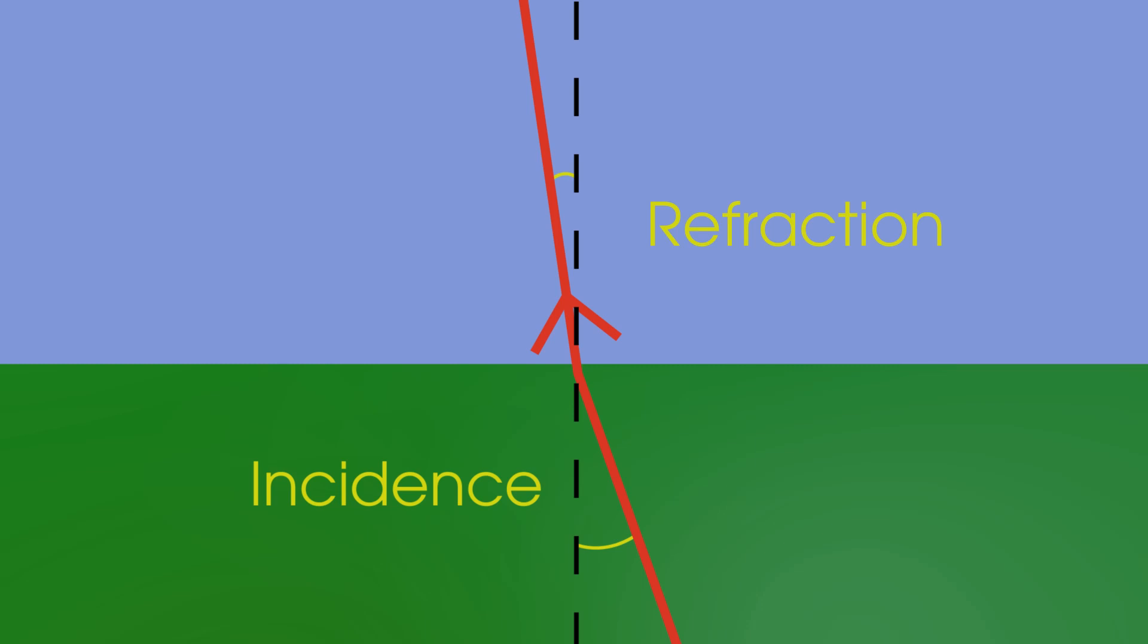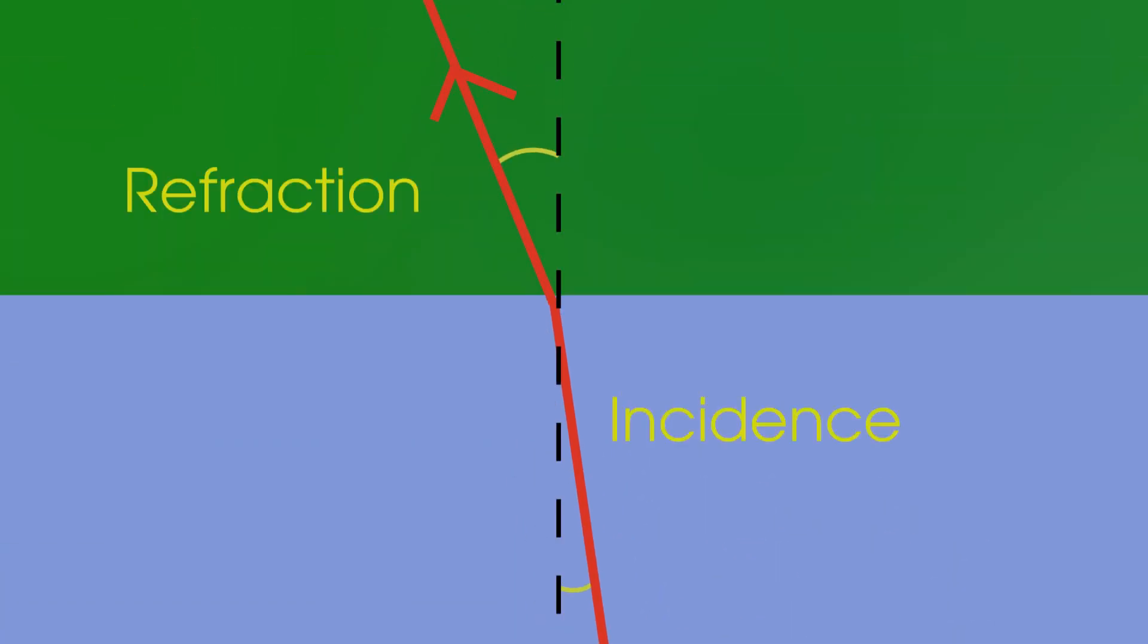So, the angle of incidence will be bigger than the angle of refraction, when it's going from air into glass, and the angle of incidence will be smaller than the angle of refraction, when it goes from glass into air.